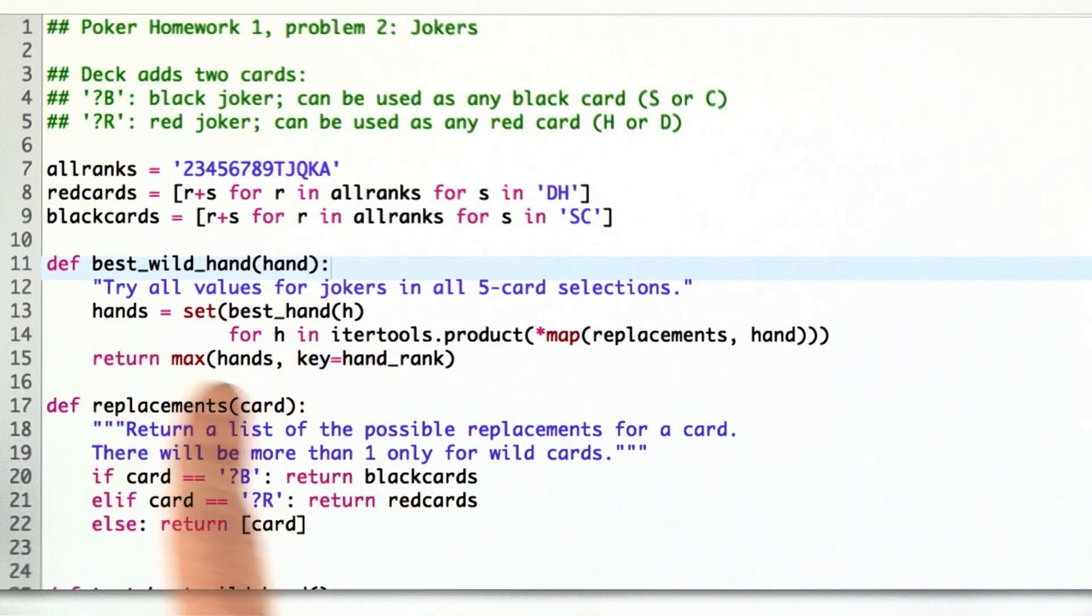And that gives us a set of possible hands, and then we go through those hands using hand rank. These hands are now the five card hands determined by best hand, and we take the maximum again according to hand rank, and that gives us the best out of those five cards.